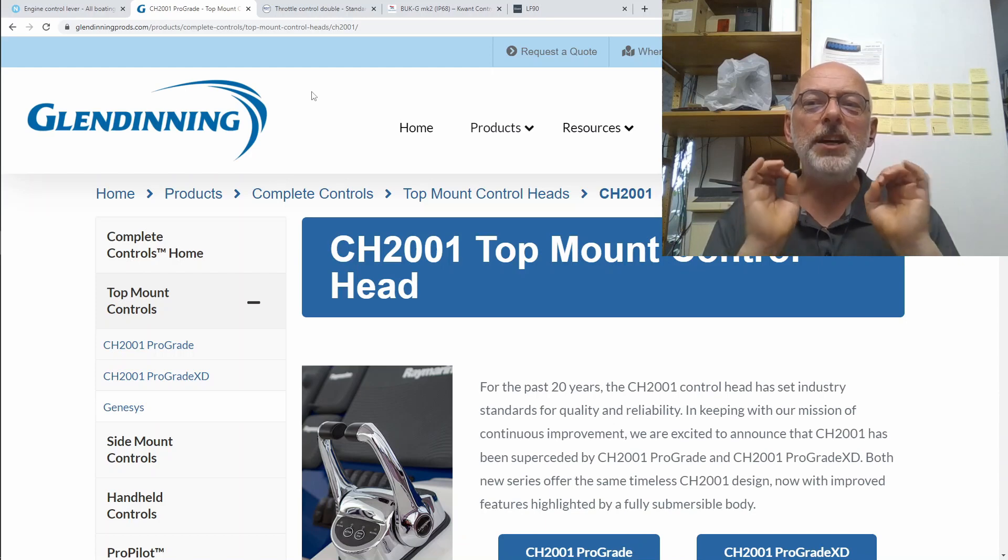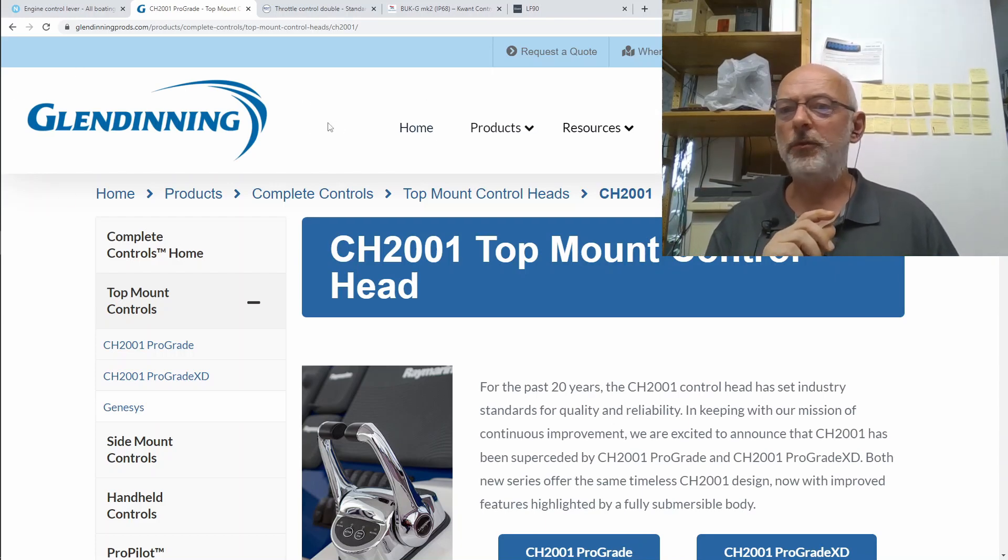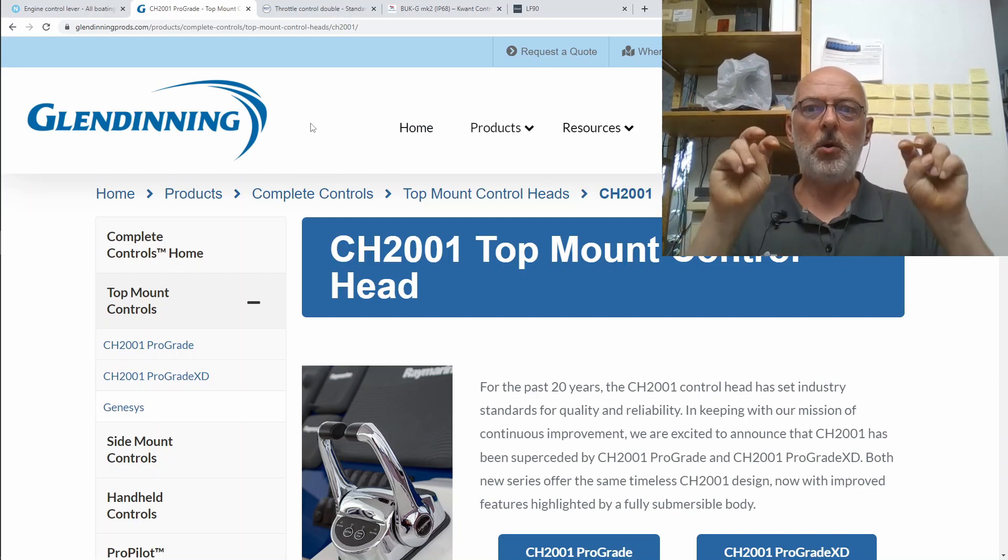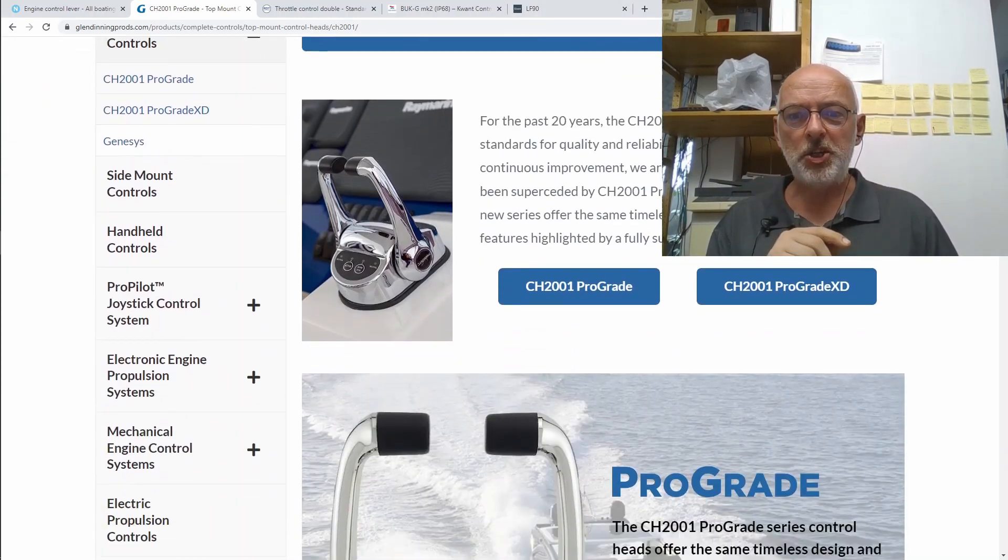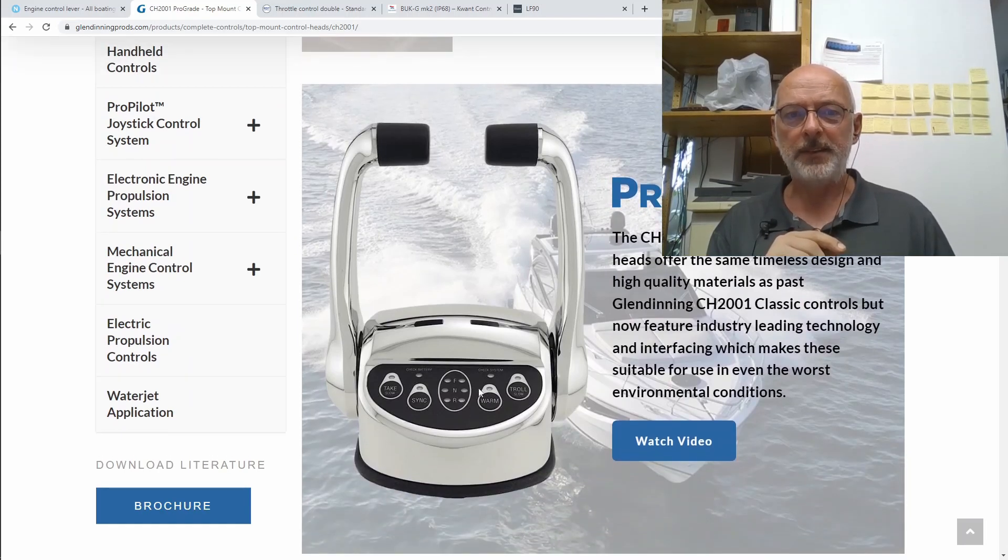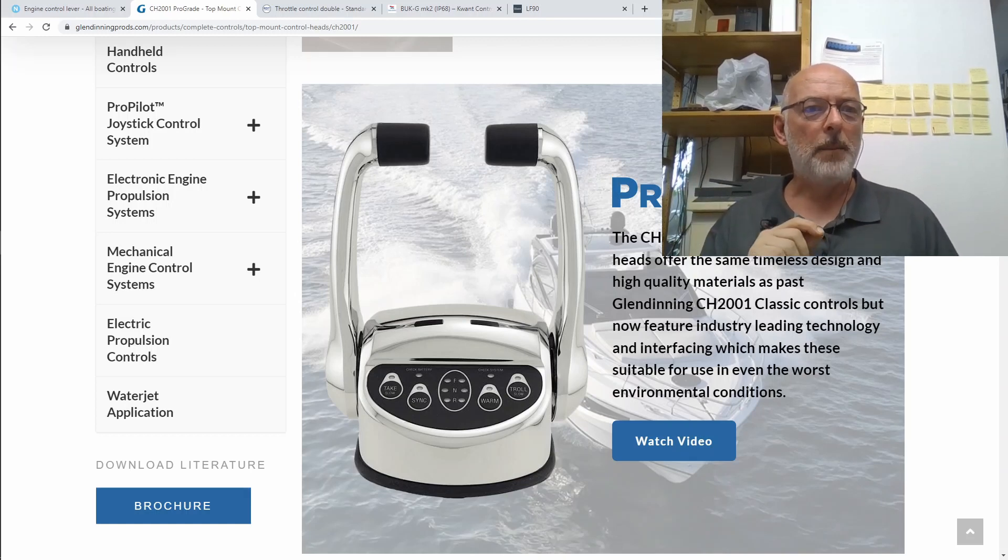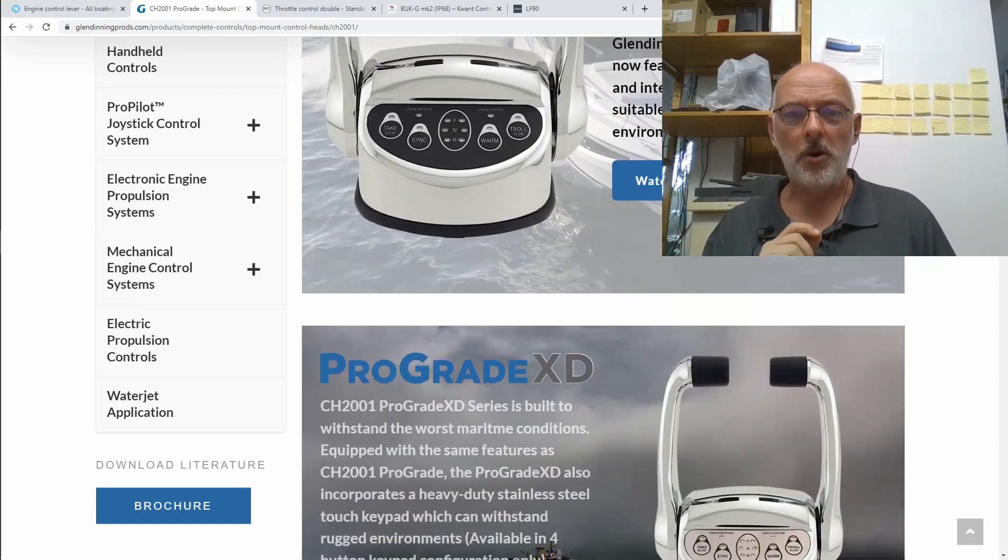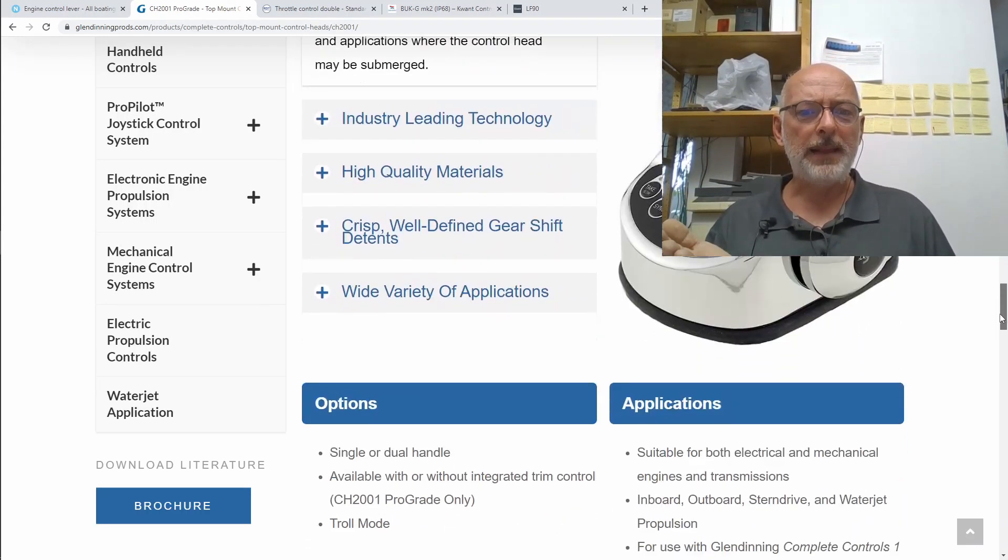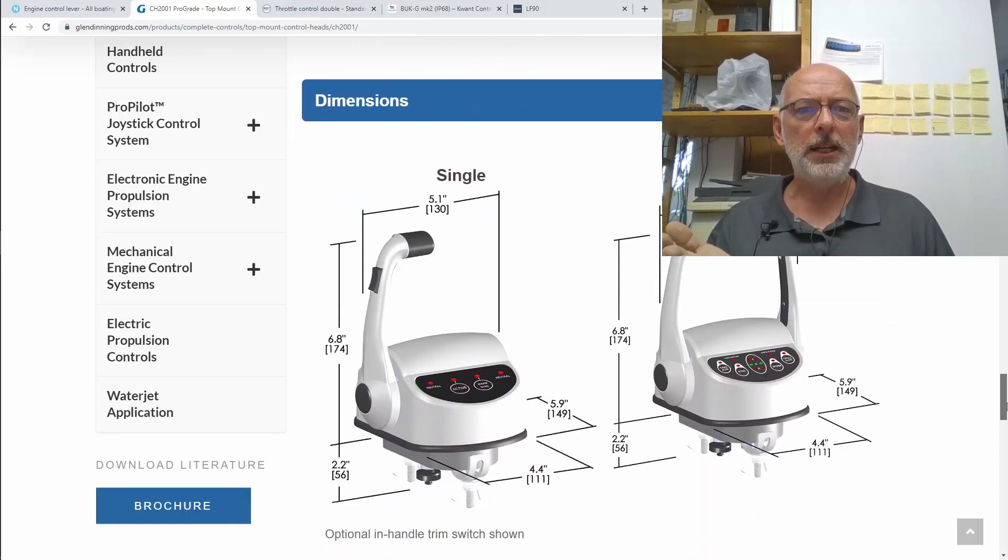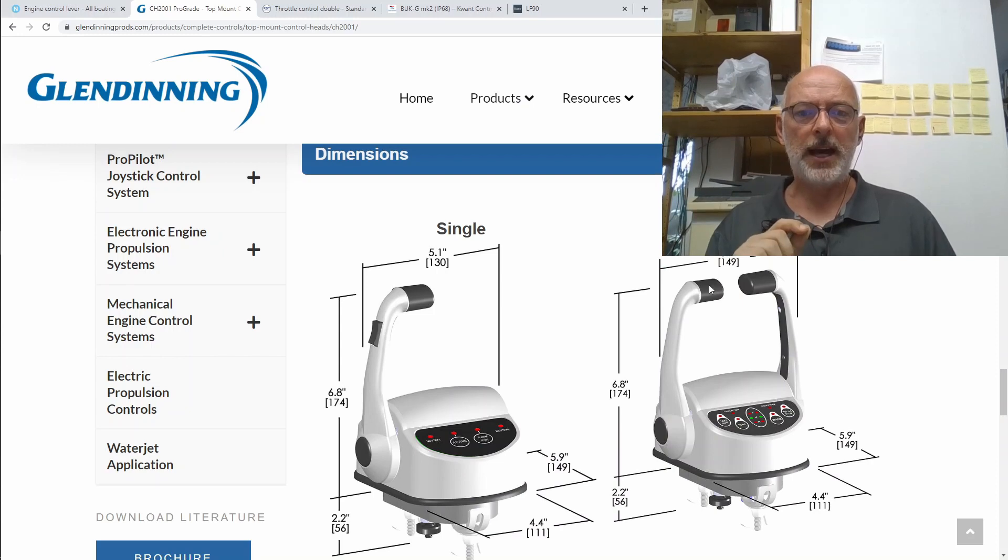However, only very few are actually IP68 certified. One of these products comes from a company named Glendenning - I assume it's the Rolls Royce of engine controls for million-dollar yachts or something like that. The cheapest IP68 offering from them, the Pro Grade throttle control, will set you back about $1700 plus tax. They're very nice and come with different interfaces including CAN bus, but they are also a little bit too large for my application. The dual setup is about 17 centimeters in height (about 7 inches) and 15 centimeters wide (about 6 inches).